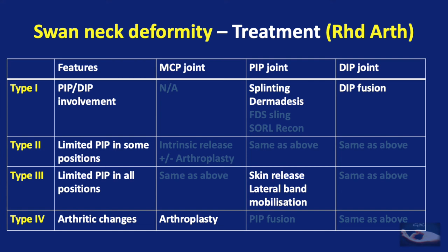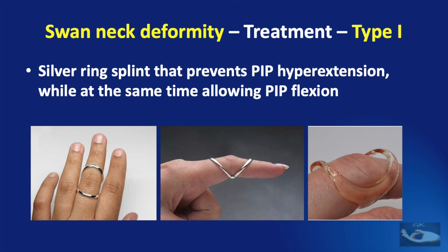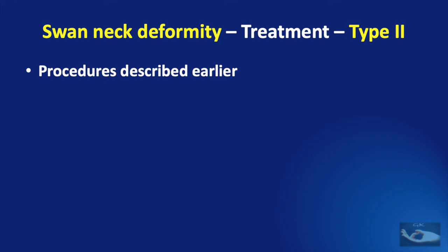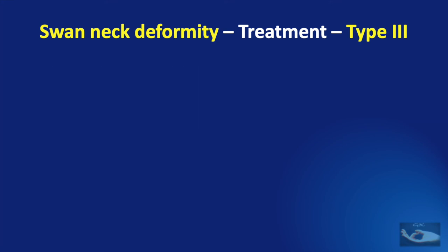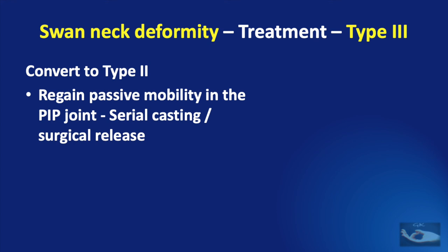In Type 1 deformity, the silver ring splint plays an important role in preventing PIP joint hyperextension while allowing PIP joint flexion — it may be made with silver or molded plastic. For Type 3 deformity where there is stiffness of the proximal interphalangeal joint, the main aim of treatment is converting this PIP joint into a flexible joint — that is, a Type 2 deformity. This can be achieved either by serial casting or surgical release.